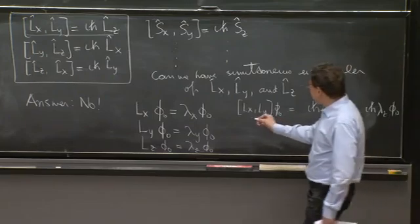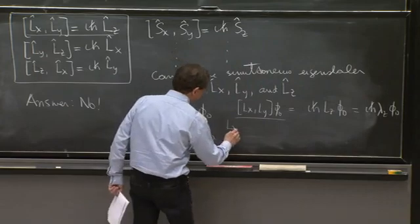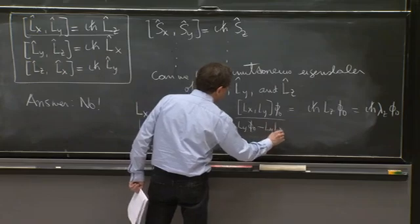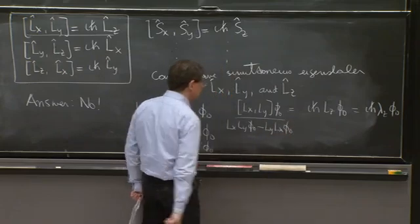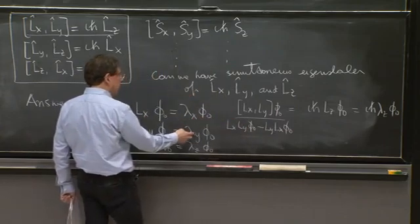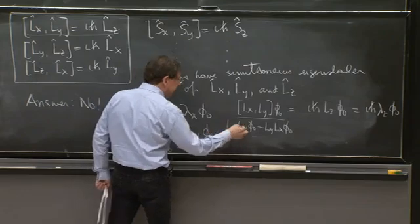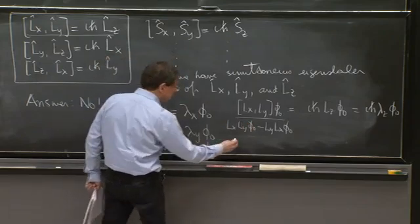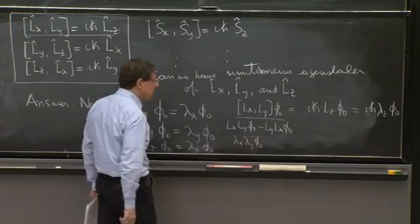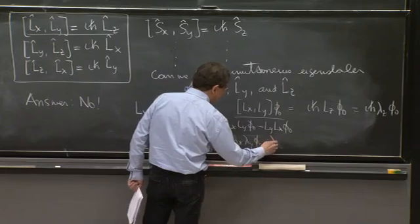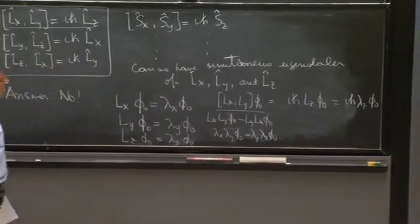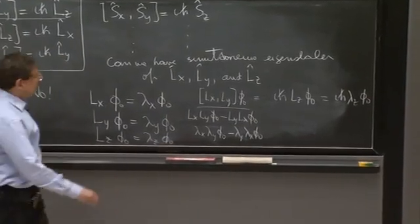But how about the left hand side? The left hand side is Lx, Ly on phi naught minus Ly Lx on phi naught. When Ly acts, it produces a lambda y, but then phi naught. And then when Lx acts, it produces a lambda x. So this produces lambda x lambda y phi naught minus lambda y lambda x phi naught, which is the same thing. So the left hand side is 0.